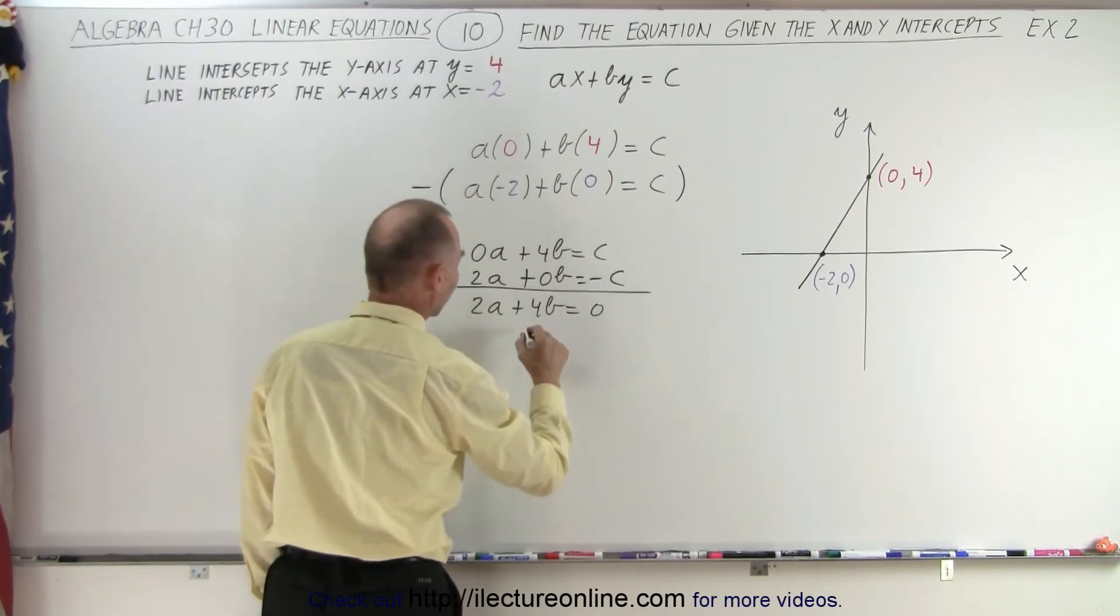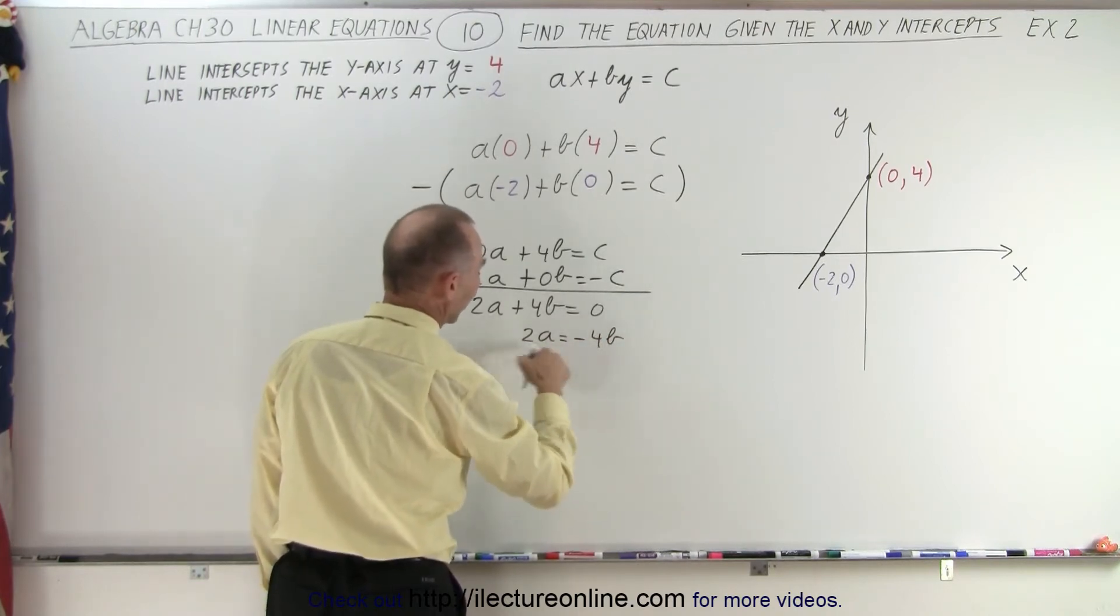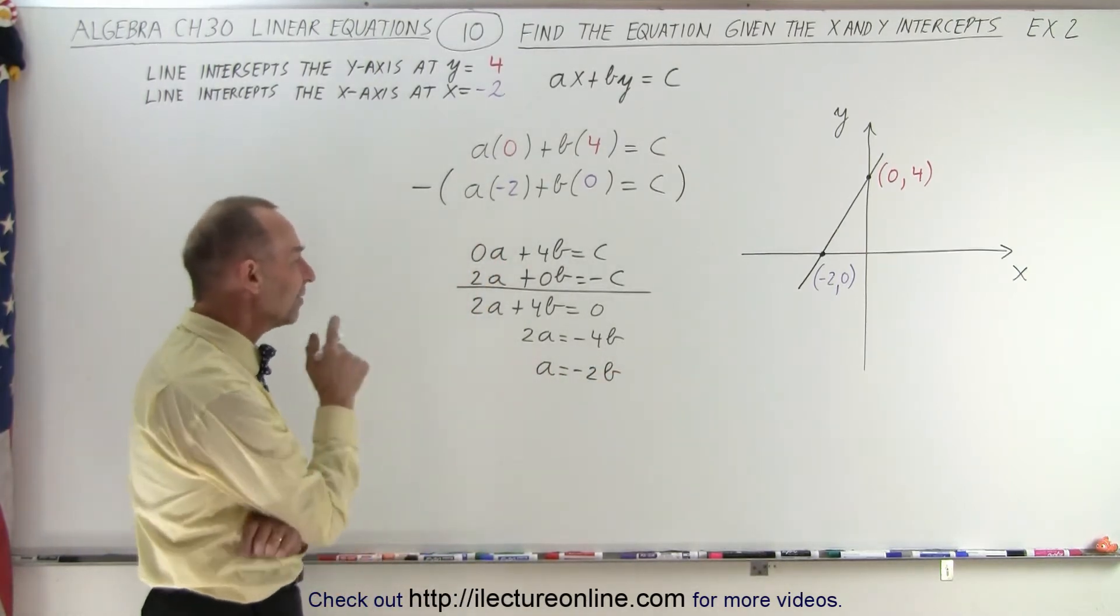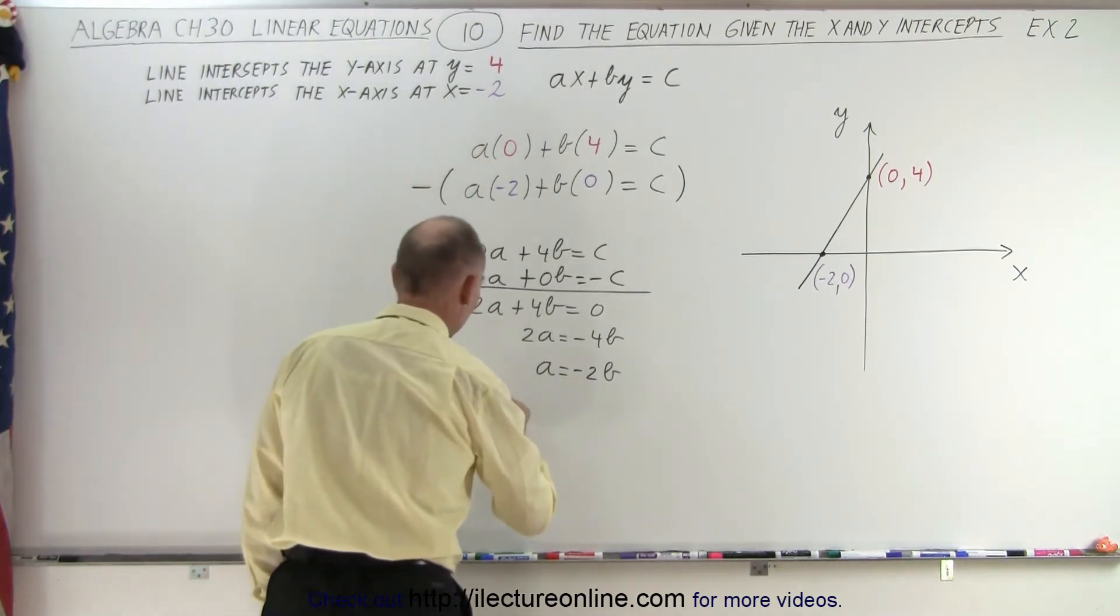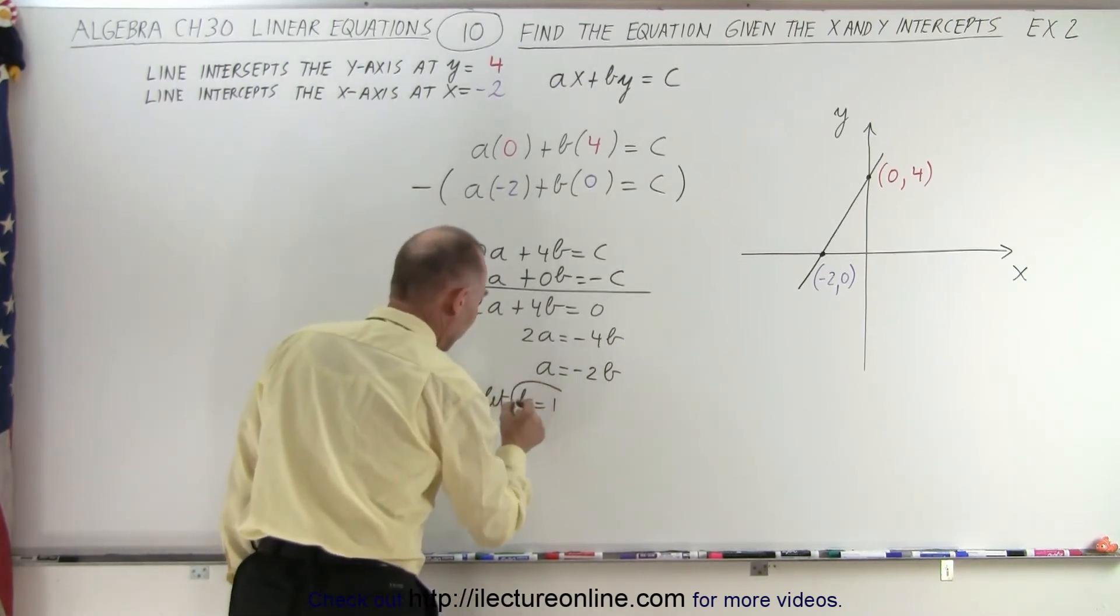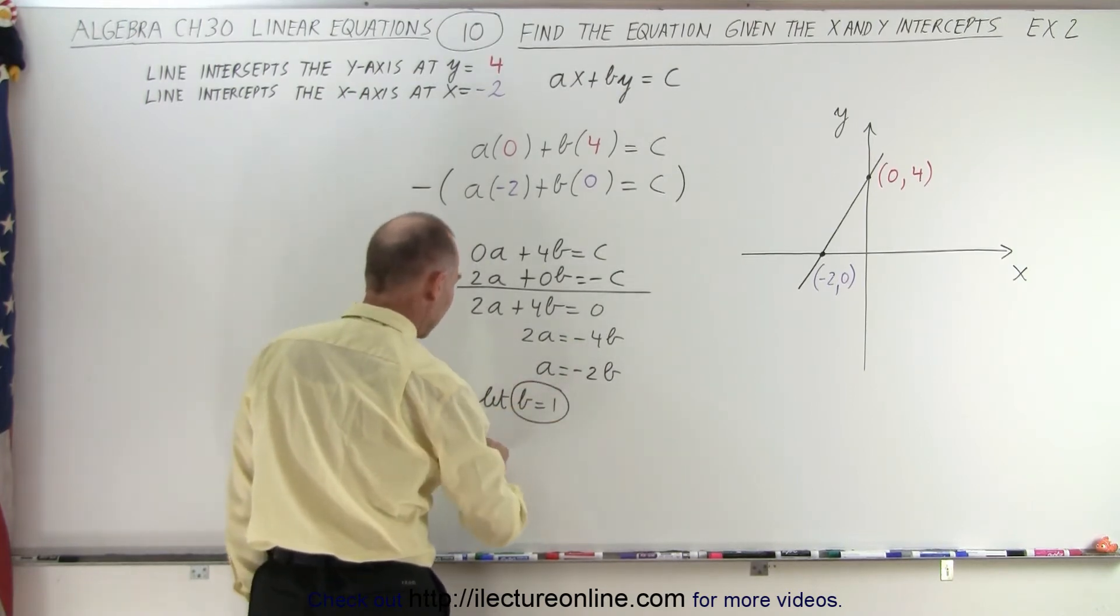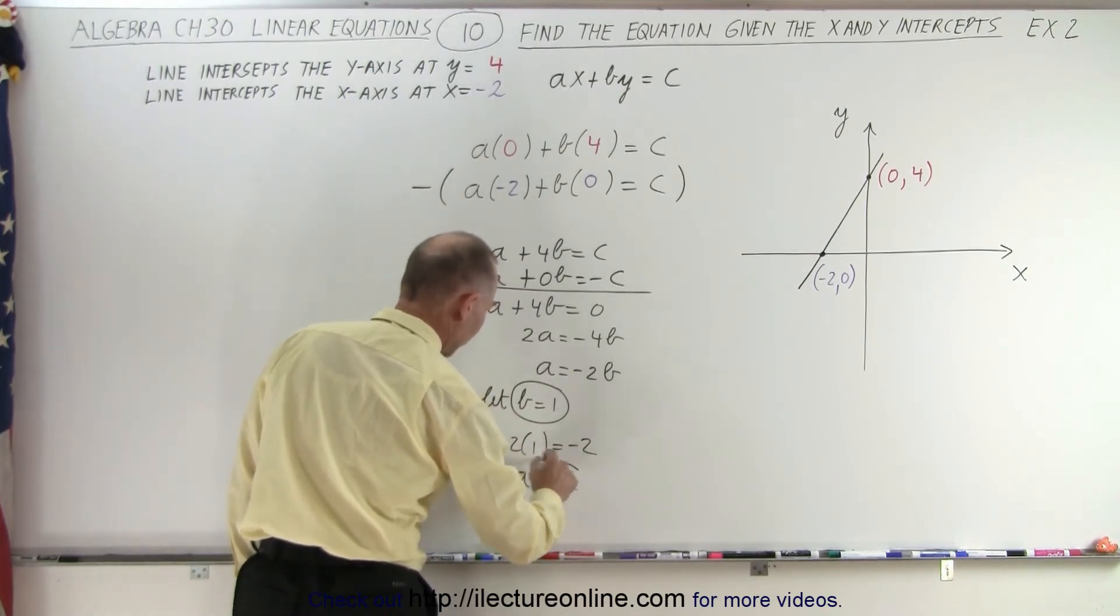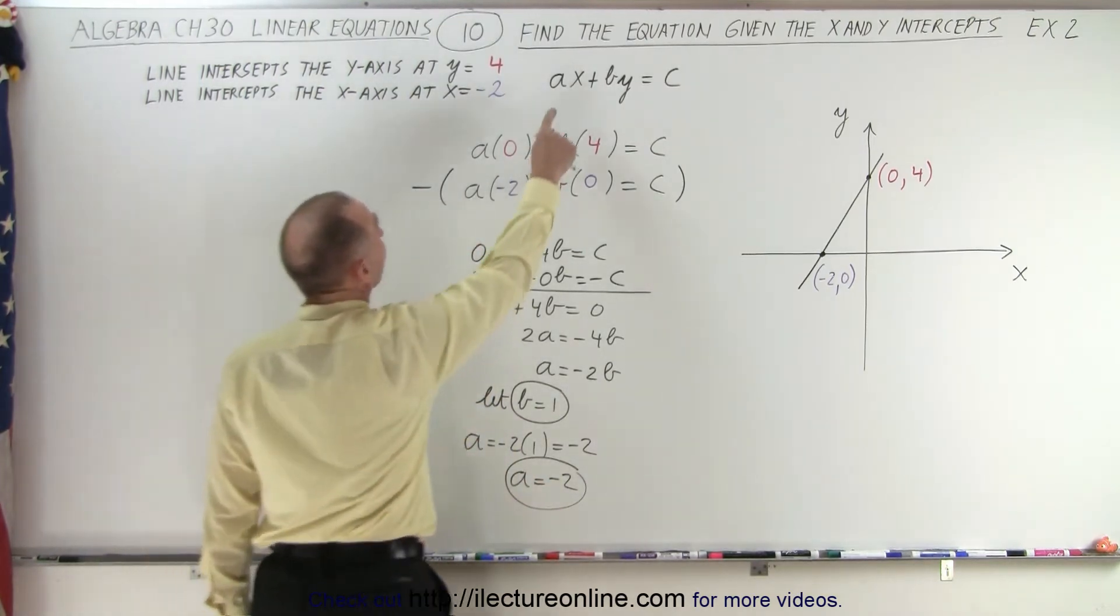Move the 4b across. We get 2a is equal to negative 4b or a is equal to, divide both sides by 2, negative 2b. So since a is equal to negative 2b, if we let b equals 1, then a will be negative 2. We'll let b equal 1 since there's no fraction. Then we get a is equal to negative 2 times 1, which is negative 2. When b equals 1, a equals negative 2, that gives us two of the three values we're looking for.